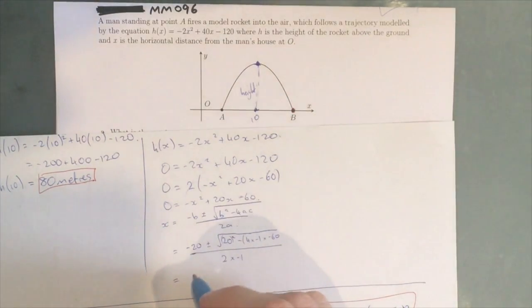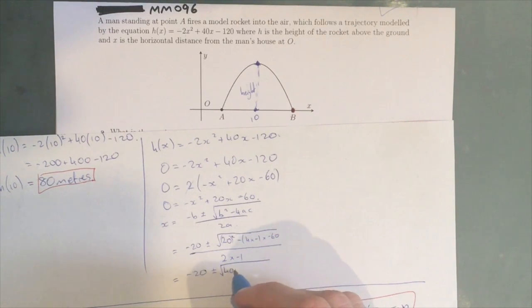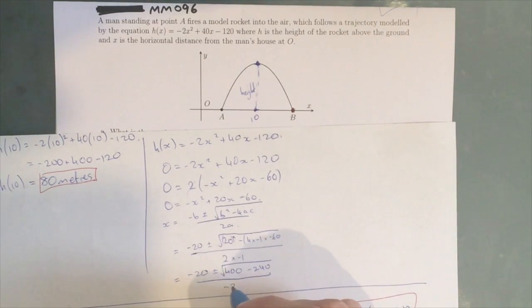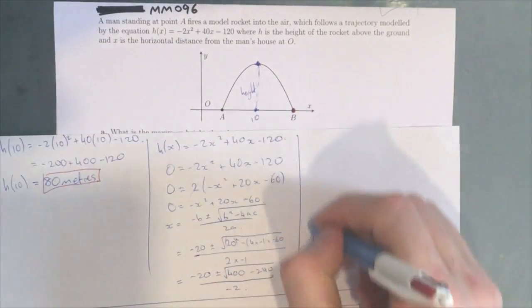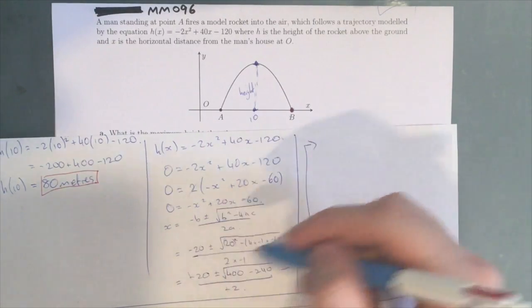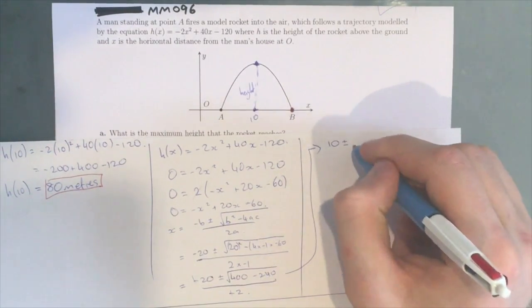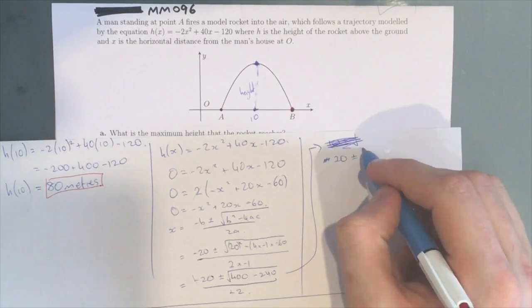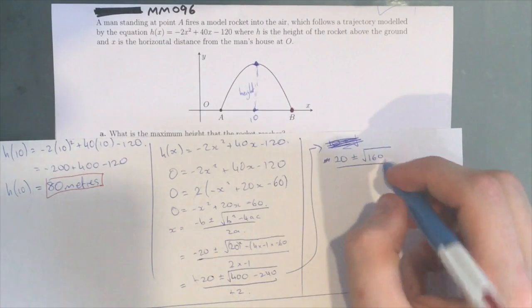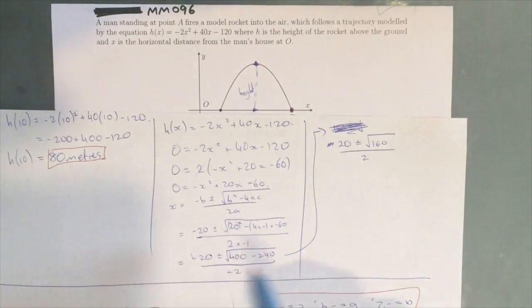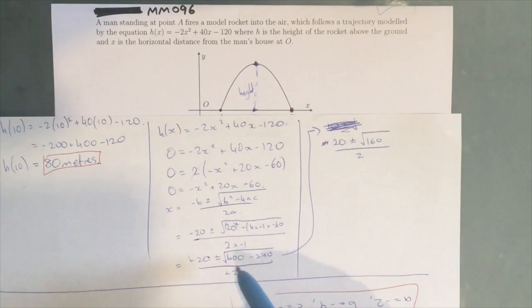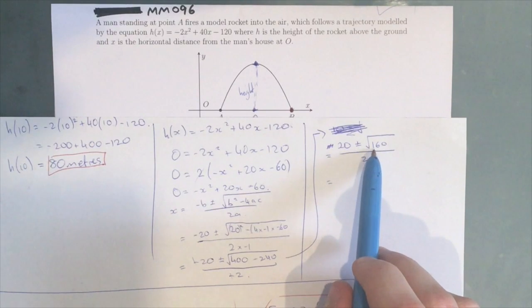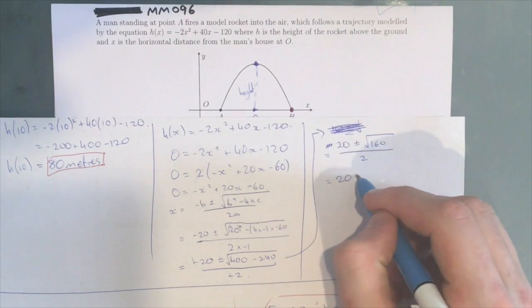So you end up with -20 ± √400, a negative, a negative, and a negative equals a negative, minus 240, over -2. So what we end up with is we can cancel these negatives down here, and we get 10 ± √160/2. So this is a surd, we can actually simplify this. This is the same as 16 times 10, which means that we can bring the square root of 16 out the front, which is 4. So that's the same as 4√10.